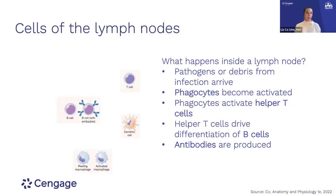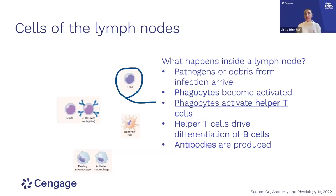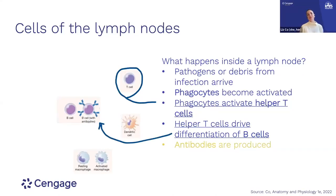The next population they activate is helper T cells — you'll remember they're the squad leaders that help activate other components of the immune response. We're getting to all the same things we talked about in our fundamentals, but presenting it differently, where T cells drive the differentiation of B cells and antibodies are produced.